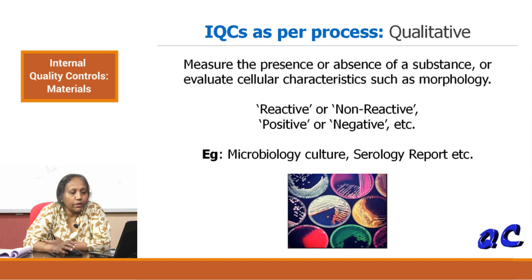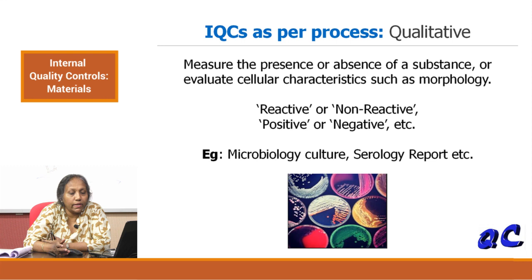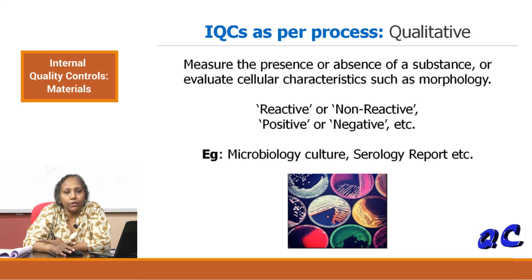For qualitative controls, these measure the presence or absence of a substance or evaluate cellular characteristics such as morphology, and you generally report it as reactive, non-reactive, positive, or negative. Microbiology cultures, serology reports, and histopathology reports are all examples of this kind of qualitative reporting. Statistical methods cannot be used for monitoring and troubleshooting of such tests.